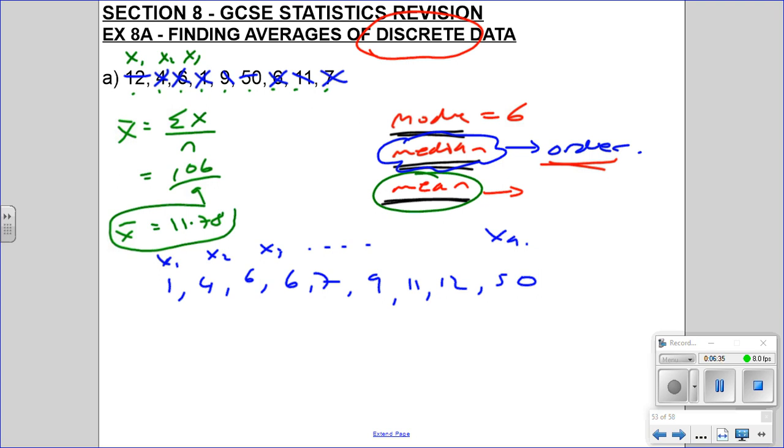So when we're trying to find the median, otherwise known as Q2, we're always going to use this formula n over 2. So whatever you've learned in GCSE, just forget that, please, we're not doing n plus 1 over 2 or anything like that. It's n over 2. Now, if n over 2 produces a decimal, then you're always going to round up to the next number for discrete data.